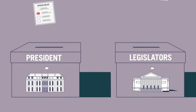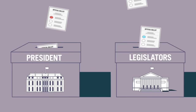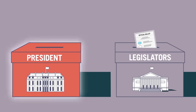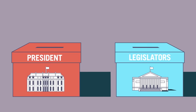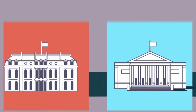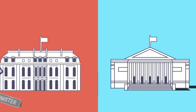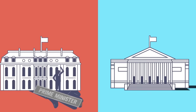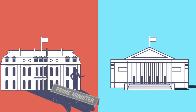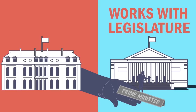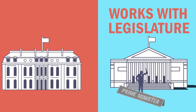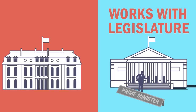And there are countries with something in between. In the case of France, the people directly elect the president and most legislators. But then the president appoints a less powerful prime minister who works with the legislature to make laws and help run the government.